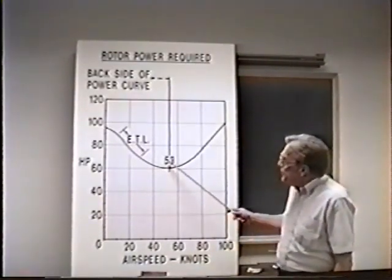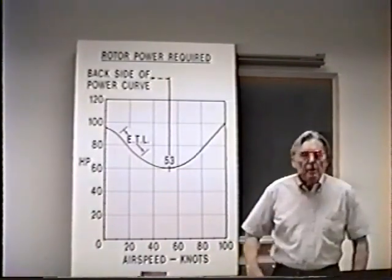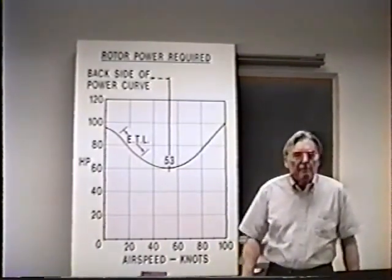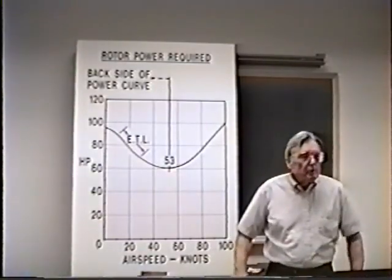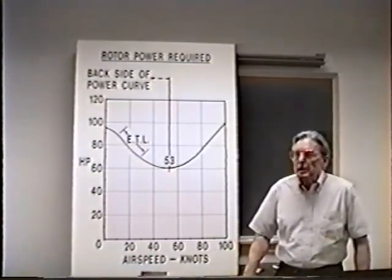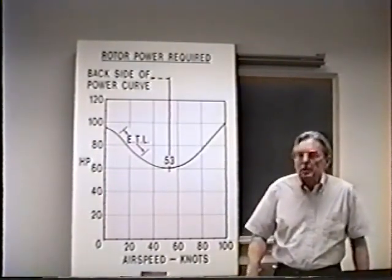This point at 53 knots where the minimum power is required actually determines three of the basic characteristics of our aircraft. It will determine our speed for maximum endurance because obviously we're burning less fuel at that airspeed than at any other airspeed and therefore can stay up in the air longer.